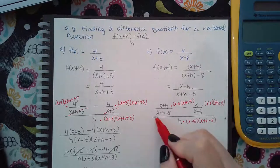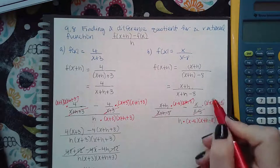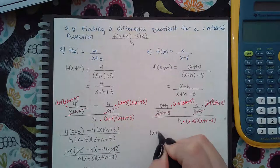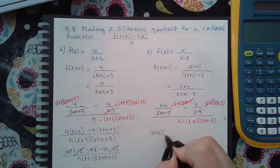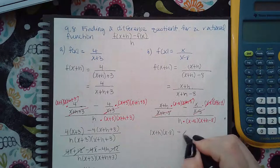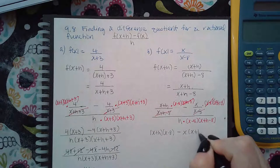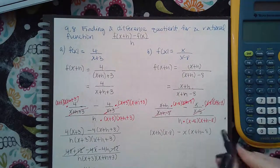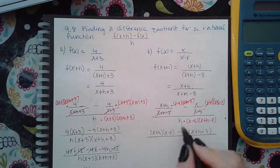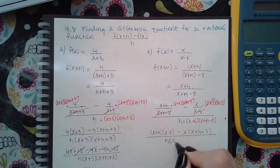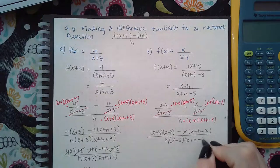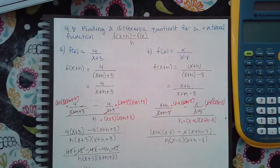The first binomial cancels one denominator, and the second binomial cancels the other denominator. I'm left with x plus h times x minus eight, minus x times x plus h minus eight, in the numerator. Do not multiply out the h in the denominator because the goal is to cancel it, and I can only cancel it if it's a factor — leave it factored out.